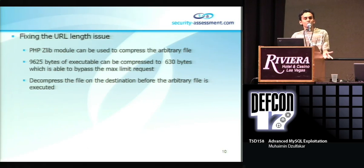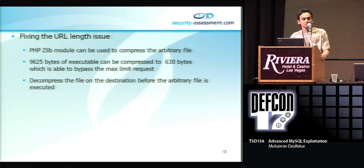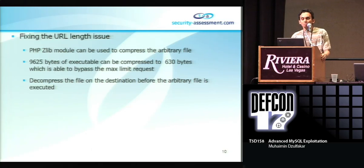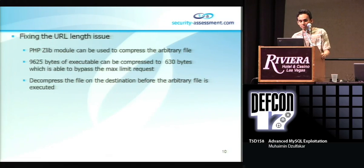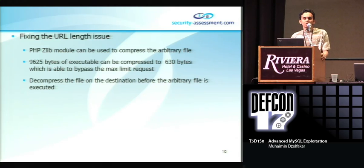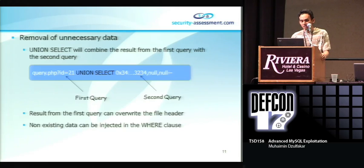To fix the URL length issue, we can simply use the Zlib module to compress our arbitrary file. In my experiment, from 9,625 bytes I was able to compress my file down to only 630 bytes. This allows us to bypass the maximum limit allowed on Apache, and the file can then be decompressed back on the destination before it is executed.